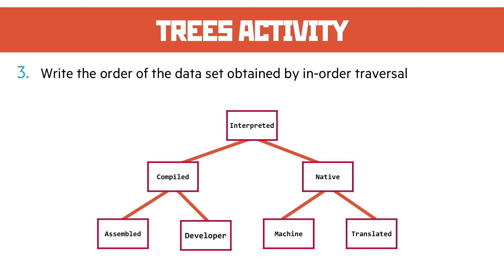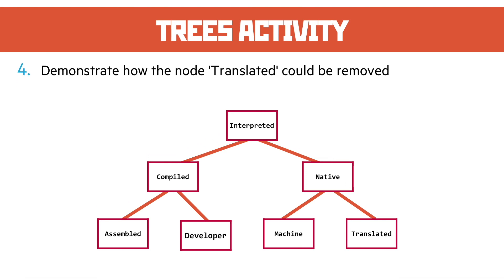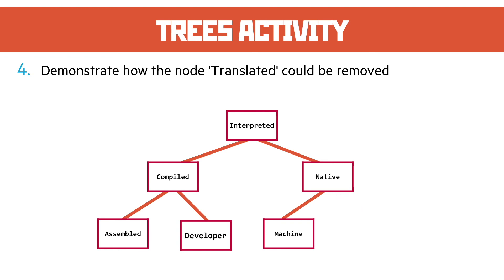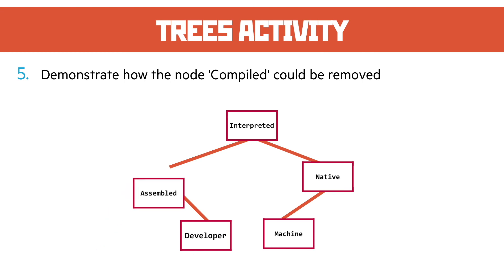Question 4: demonstrate how the node 'translated' could be removed. Translated is a branch node with no further branches, so it can just be completely removed. How about 'compiled'? Well, compiled is a little bit different because it has two branches. So we remove it, then we identify the smallest value out of what's remaining, and we move that up to replace it.